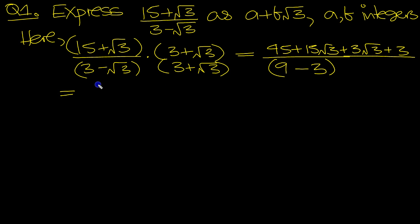45 plus 3 is 48. 15 plus 3 is 18 lots of root 3, over 6. Pull a 6 out of the top and divide it into the bottom. If you do that, then you're left with 8 there and 6 root 3s here.